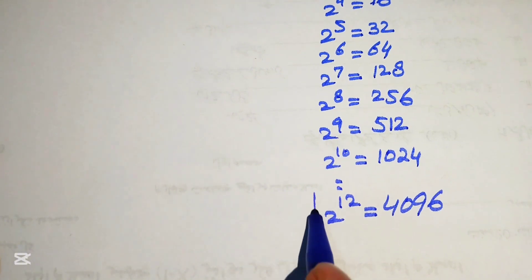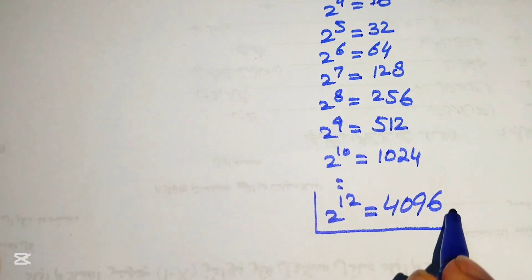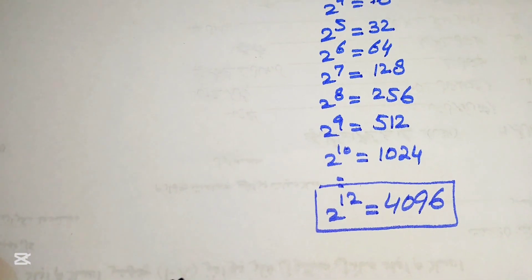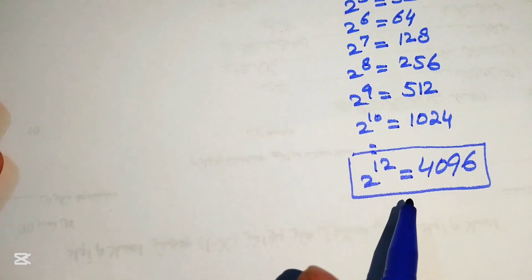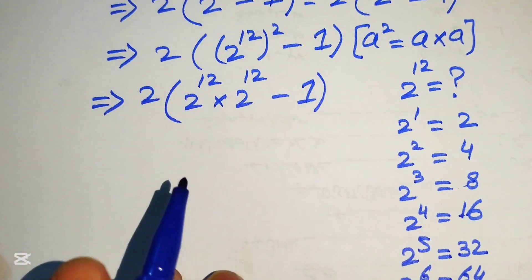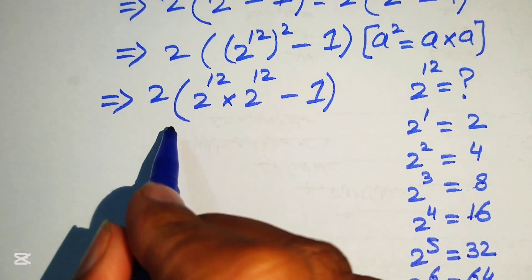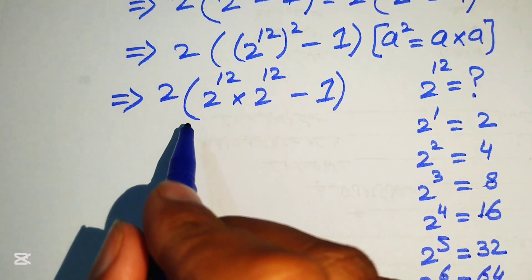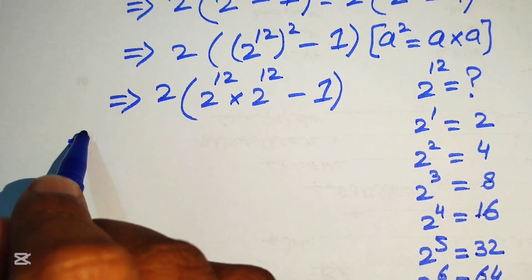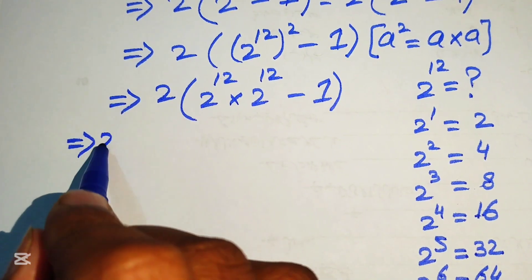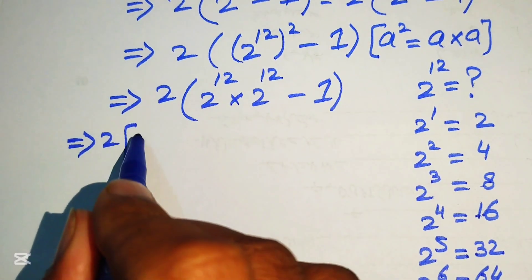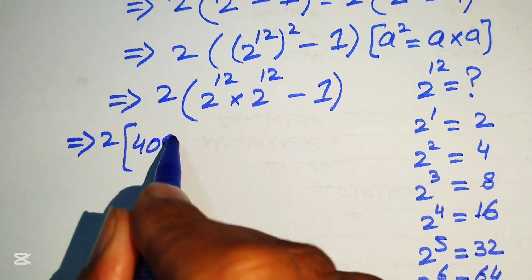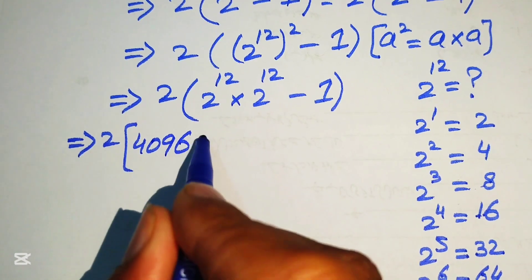This is our desired value. Now we replace 2 to the power of 12 with 4096. When we substitute this value, the expression becomes 2 times 4096 multiplied by 4096, minus 1.